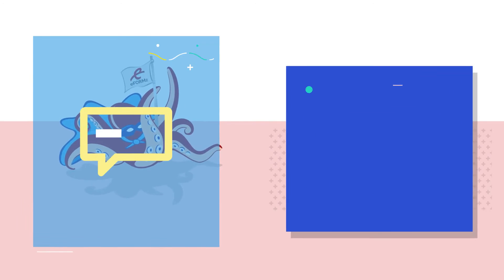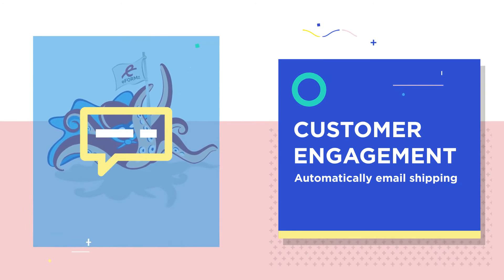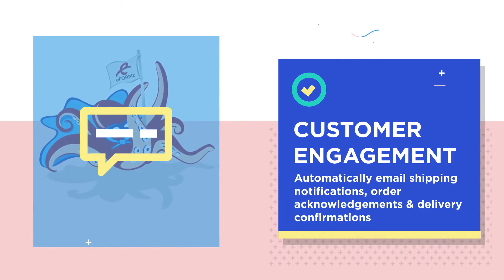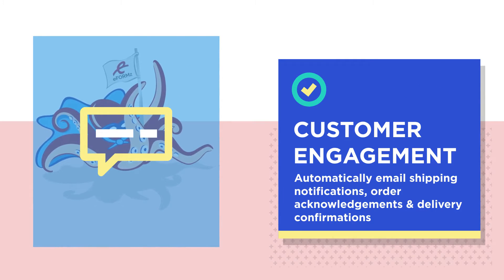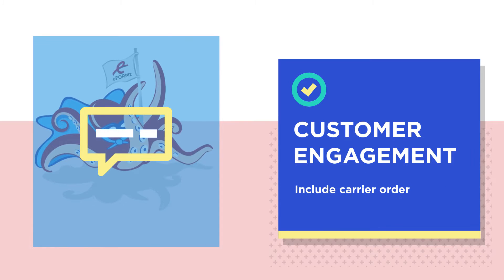Use eForms to automatically email shipping notifications, order acknowledgements, or delivery confirmations in HTML format to your customers. Include carrier order tracking information in the body of the email to allow customers to check on the status of their orders.